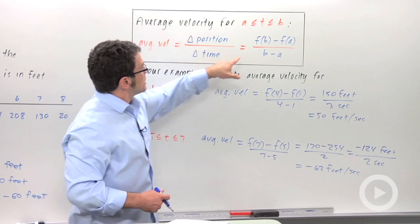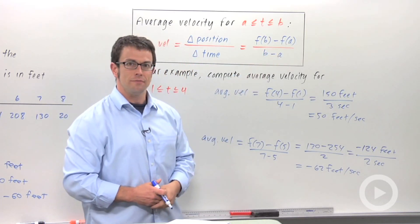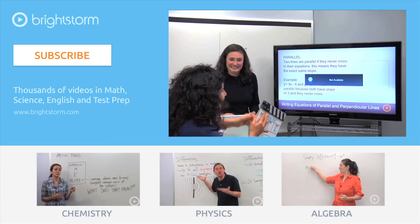So average velocity is change in position over change in time. And remember, change in position is final position minus initial position.